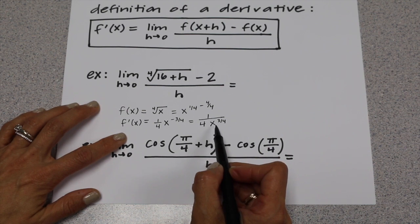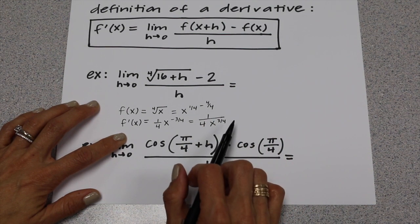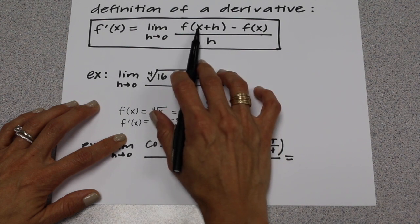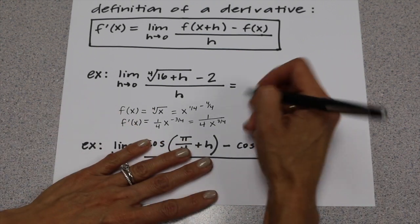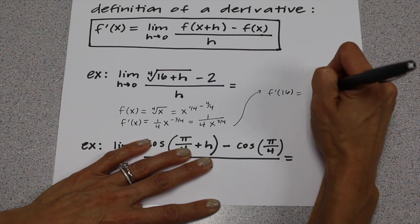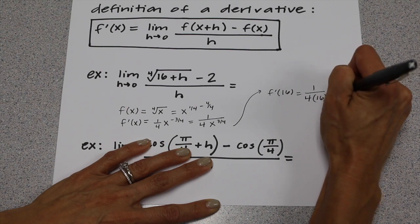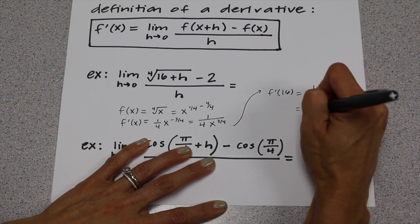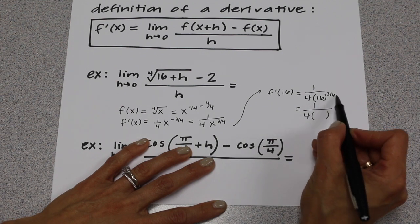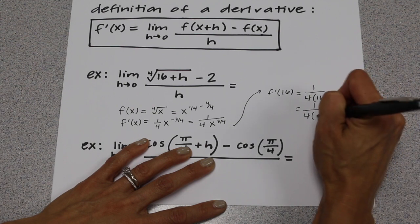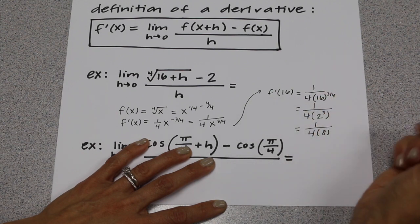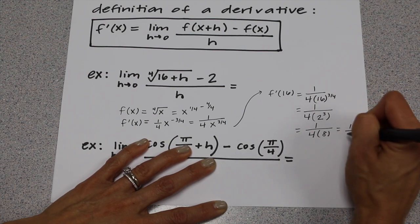Now we've found the derivative of f, and we need to plug in the x value. Looking at the expression, we have 16 plus h. Since the formula uses x plus h, that means x is 16. So to finish this, f prime of 16 equals 1 over 4 times 16 to the 3/4. To evaluate 16 to the 3/4, we do 16 to the 1/4, which is 2, and then cube it. 2 cubed is 8, so our final answer is 1/32.